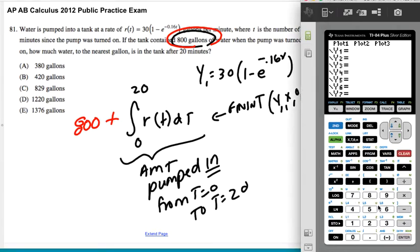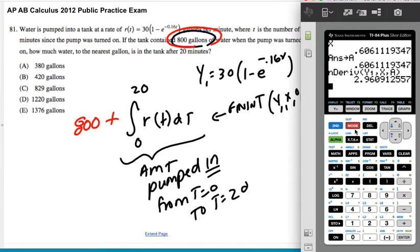So go ahead and go to your y1. You're going to put in 30 in parentheses, 1 minus e to the negative 0.16t, but we're going to use x. Close the parentheses there. Quit out. I'm going to do 800 plus math 9, there's over to y, there's pick y1, comma, with respect to x from 0 to 20.